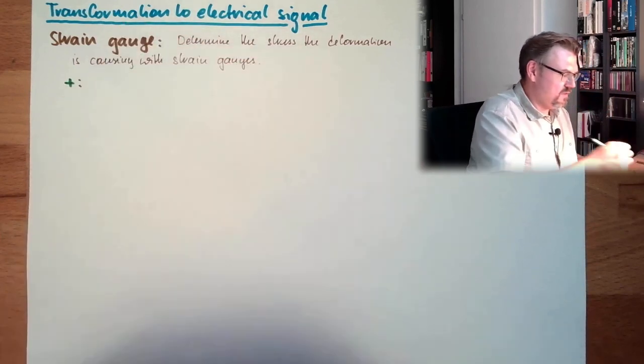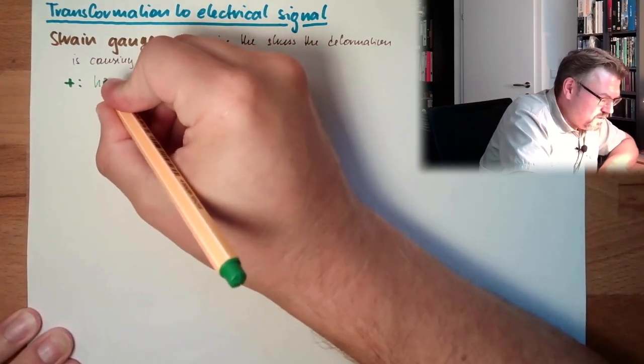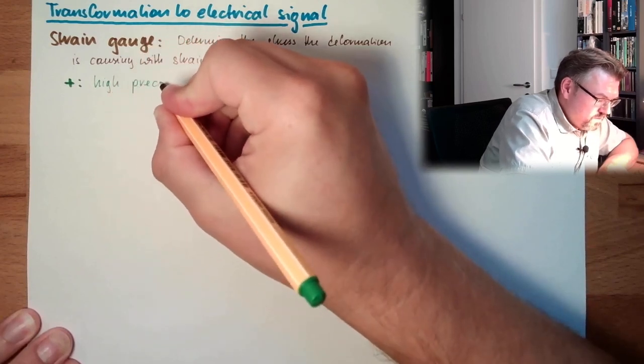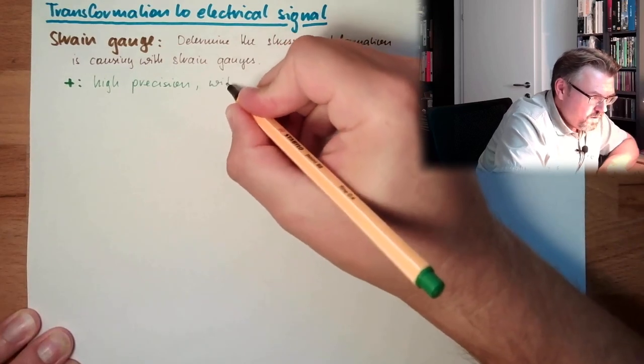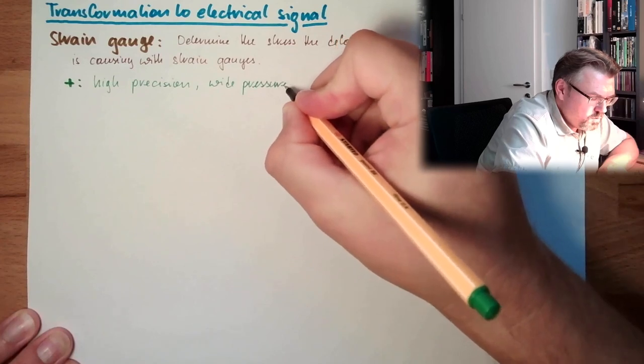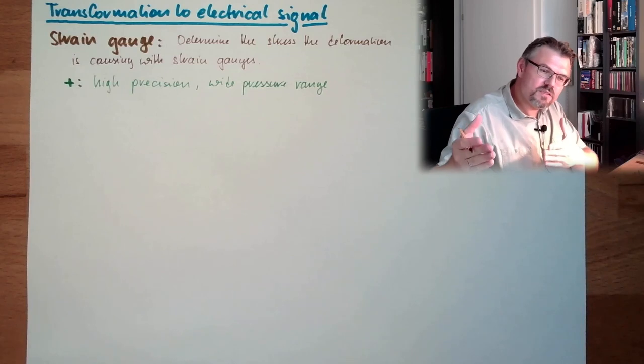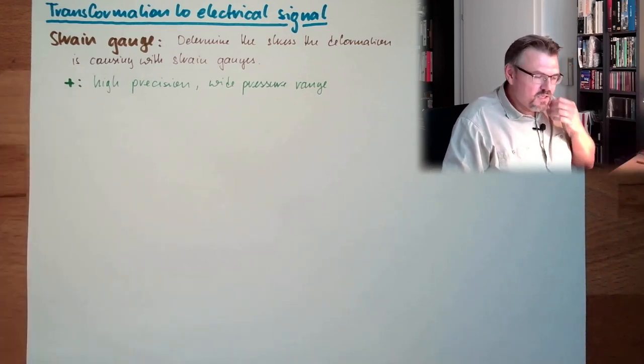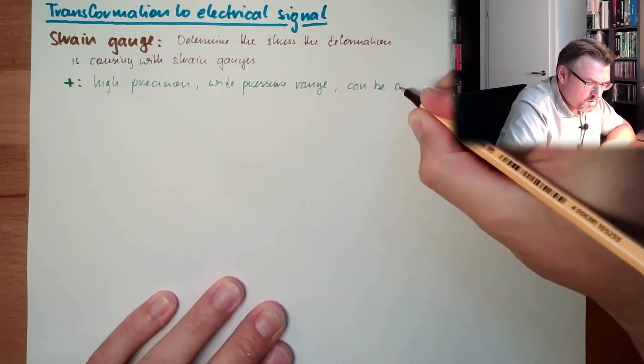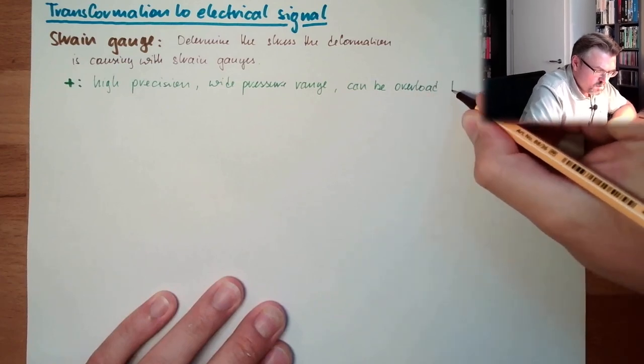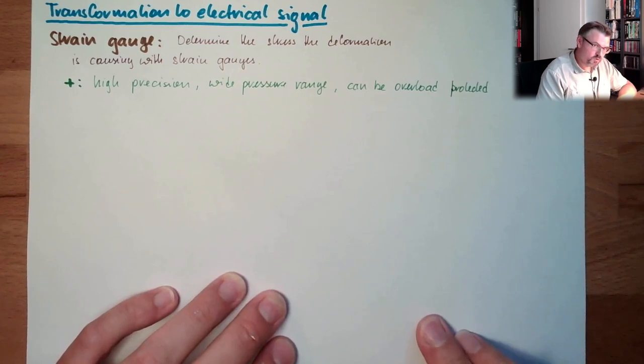What are the benefits of this? So there are plus sides. Changing into electrical signal, this is working with high precision. So we have high precision here. And we can, we have a wide pressure range. So you can make low pressure sensors and you make high pressure sensors simply by exchanging the deformation material and so on. And can be overload protected. Not out of the box, but we can take measures that it's overload protected.